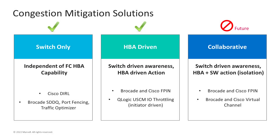Switch vendors have implemented proprietary capabilities to address slow drain congestion. Dynamic ingress rate limiting is implemented by Cisco, while slow drain device quarantine, port fencing, and traffic optimizer technologies are implemented by Brocade. The Fiber Channel industry has adopted a means of allowing HPAs and switches to communicate about congestion situations. HPA vendors are leveraging these fabric performance impact notifications for initiator-based actions. Over time, collaborative efforts will result in joint actions by both HPA and switch in unison, with support for virtual lanes, quality of service, and isolation techniques.